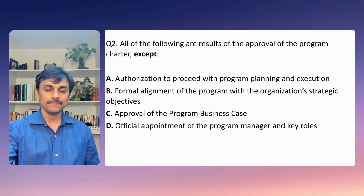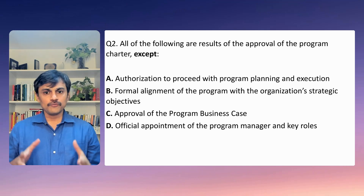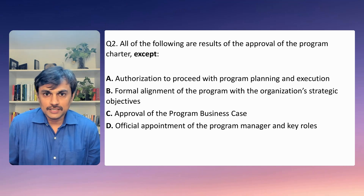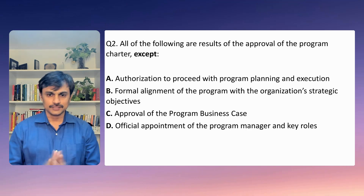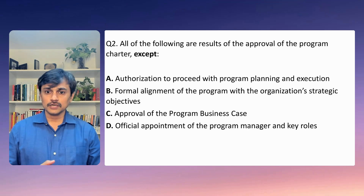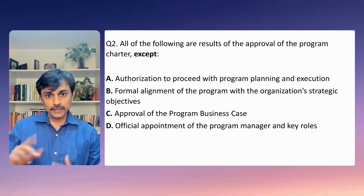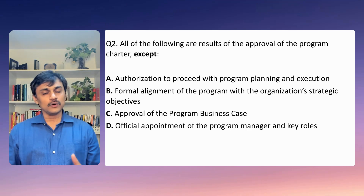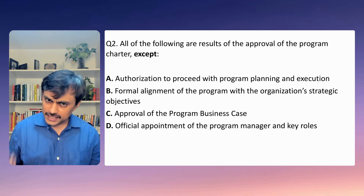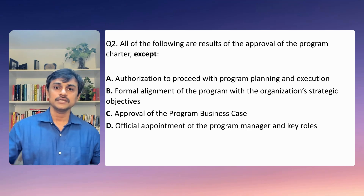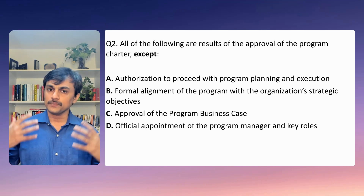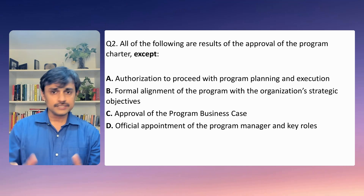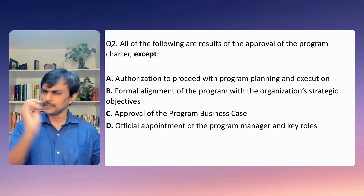Question two: All of the following are results of the approval of the program charter — except. The question expects you to understand what happens when the program charter gets approved. Option A is authorization to proceed with program planning and execution. This is definitely correct — the whole purpose of a program charter is authorization. It authorizes the program, authorizes the allocation of organizational resources, creates alignment among stakeholders, and is fundamentally an authorization tool.